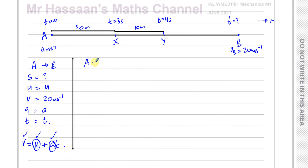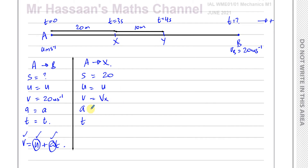Let's look at between A and X. Using SUVAT: S equals 20 meters, U is the same U as in the A-to-B case, V at X is unknown, the acceleration A is constant and the same as in the A-to-B case, and T equals 3 seconds. The U and A here are the same as in the A-to-B situation, which is very useful.